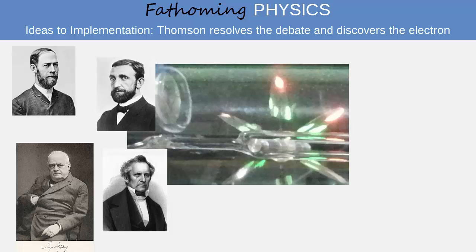Most of this evidence, other than the deflection in magnetic fields, pointed the German scientists towards an interpretation of the rays as being a type of light, or vibration in the ether.